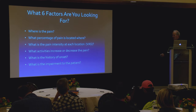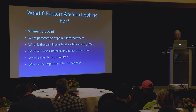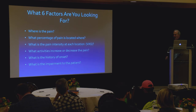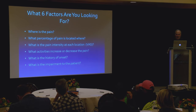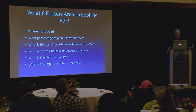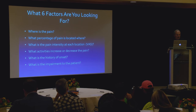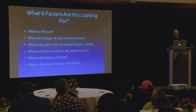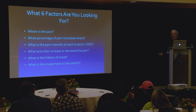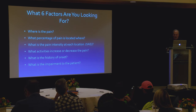Fourth: what is the history of onset? Is it a slow gradual onset, or did they bend down, feel a pop, and two days later have leg pain? That tells you a great deal. Fifth: what is the impairment to the patient? If someone says they have terrible leg pain but rates it a two to four on the VAS, a four doesn't even take your mind off anything — so you have to ask what they actually can't do. This is hugely important to find out how the disorder is affecting their life.